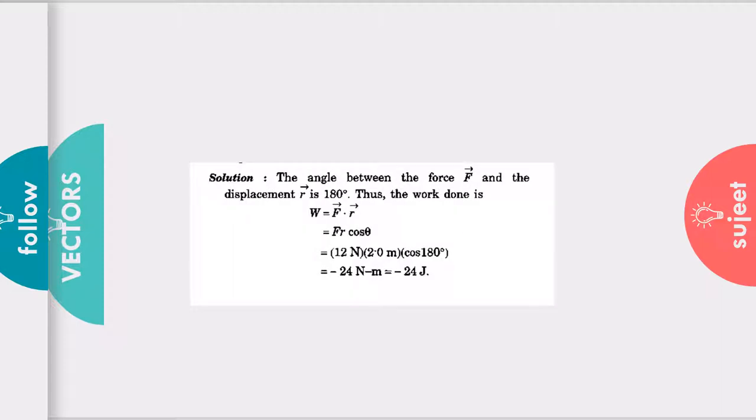Now let's see the solution. Angle between vector F and r is 180 degrees. Why? Because one is going upward and another is going downward, so definitely it is making a complete straight line. And straight line angle is 180 degrees.